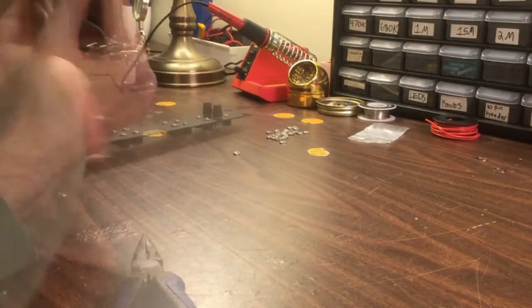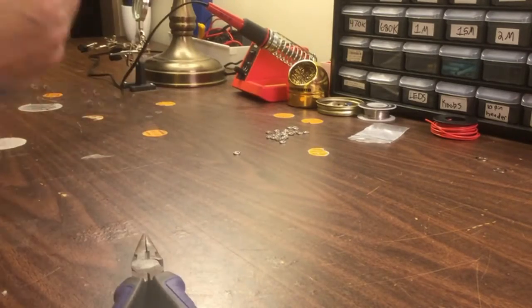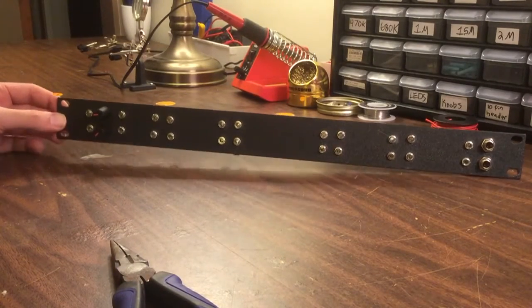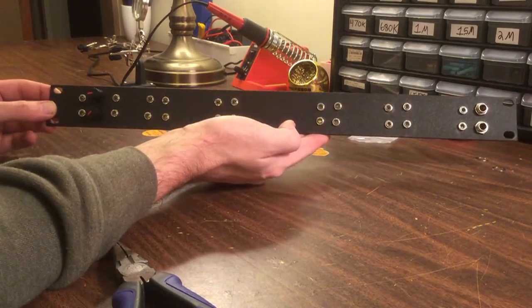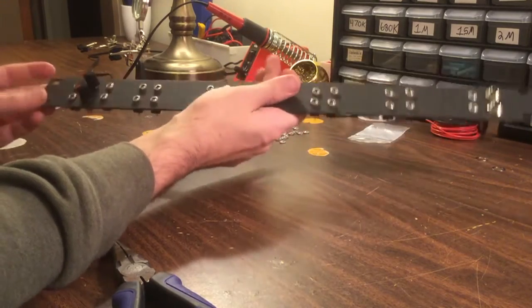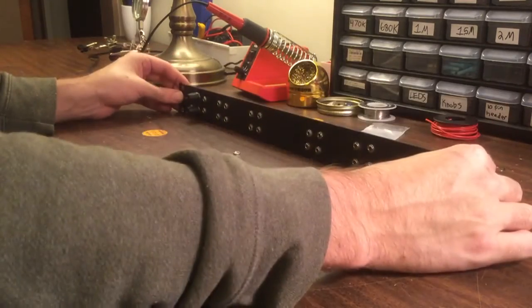Like I said, on the end here we have these two attenuators on the top and bottom. Those are separate. We've got an input, the knob that controls the amount, and then the output. Then we've got all these multiples in the middle, and our cable adapter multiple on the very right side.